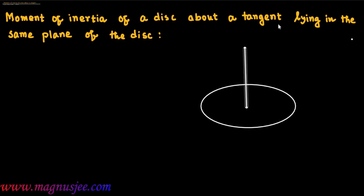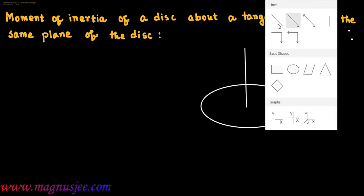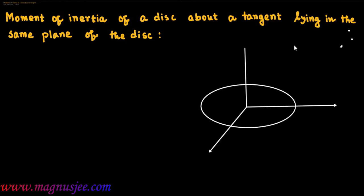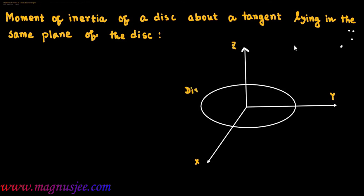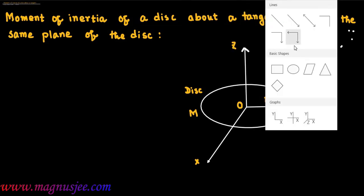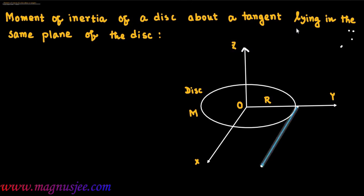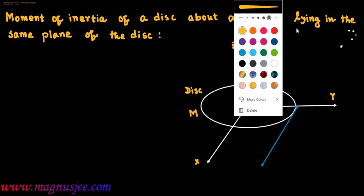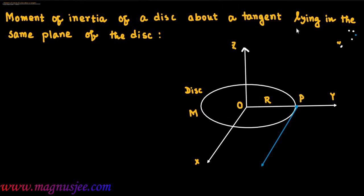In the diagram, this is a disc. We consider the z-axis passing through the center of the disc and perpendicular to the plane of the disc. We can draw two mutually perpendicular axes — the y-axis and x-axis — meeting at the center of mass of the disc and lying in the same plane of the disc. M is the mass of the disc, O is the center of mass, and R is the radius of the disc. We consider a tangent PT lying in the same plane of the disc.